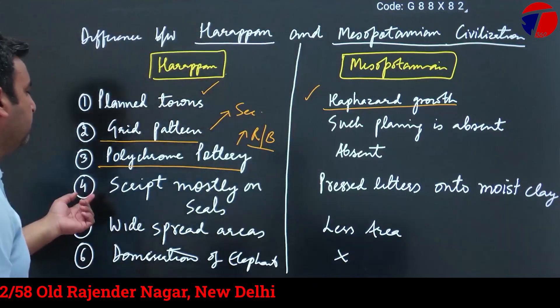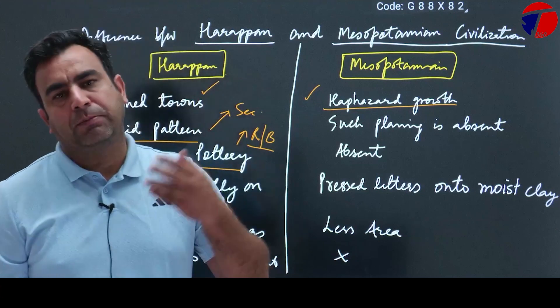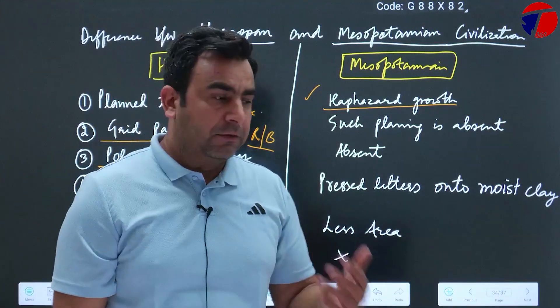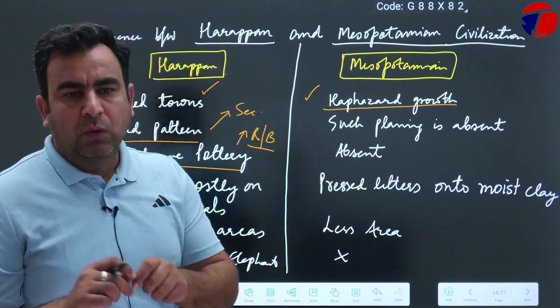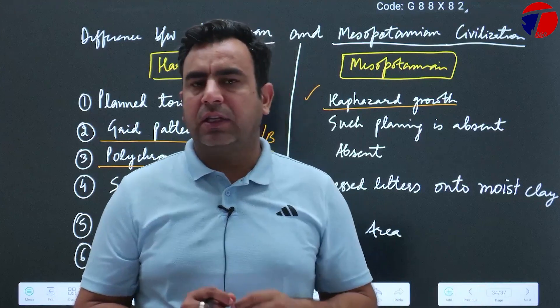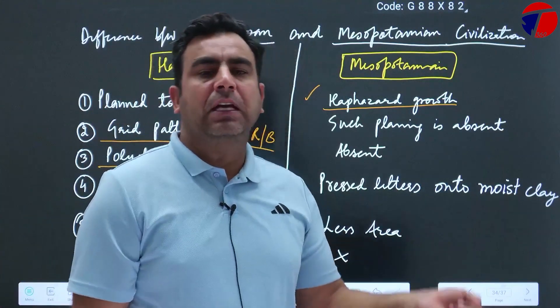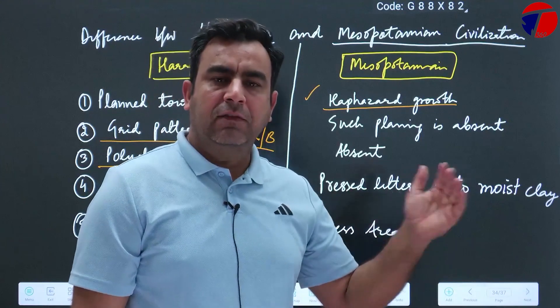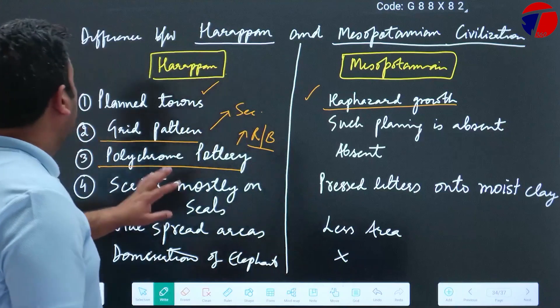The Harappan script is yet to be deciphered. Mesopotamian civilization's script has been deciphered. Harappan script is on small seals without long inscriptions. But in case of Mesopotamian civilization, they had very long inscriptions. Both are pictographic, but theirs has been decoded, ours has not.